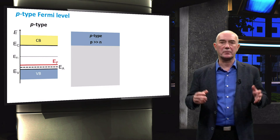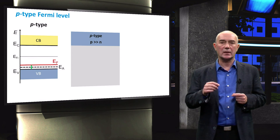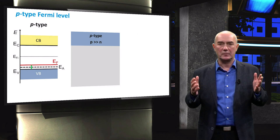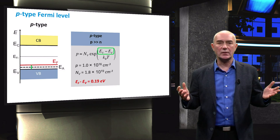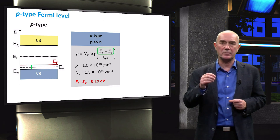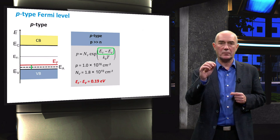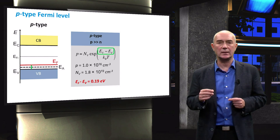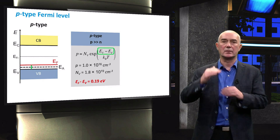We can use the same process to solve for the Fermi level position in a P-type semiconductor. This time we are interested in the distance between the edge of the valence band and the Fermi level, and we expect the Fermi level to be close to the valence band. Using the relationship for hole concentration with the effective density of states in the valence band Nv, the value for the Fermi level position with respect to the valence band edge is +0.19 eV, meaning the Fermi level is above the valence band.